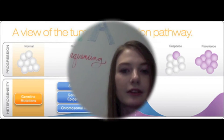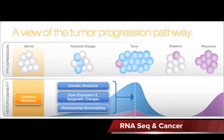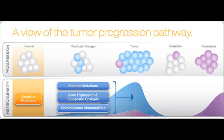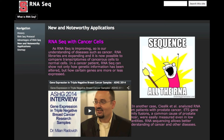RNA-seq has revolutionized the way gene expression is analyzed. With faster and more accurate results, RNA-seq has improved the study of medical conditions such as cancer and immunodeficiency disorders. Our understanding of gene expression in other organisms has improved, and much more is to be learned with RNA-seq technology. Visit the new and noteworthy applications page to find out about our favorites.